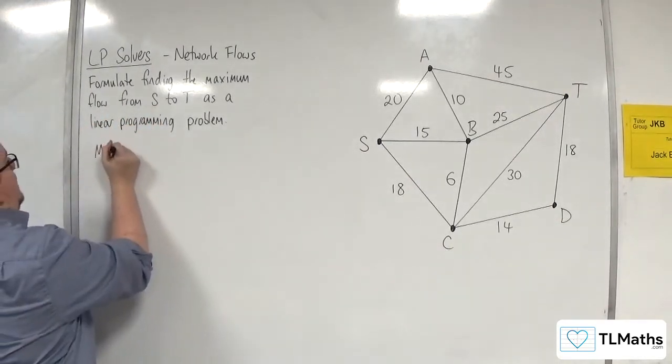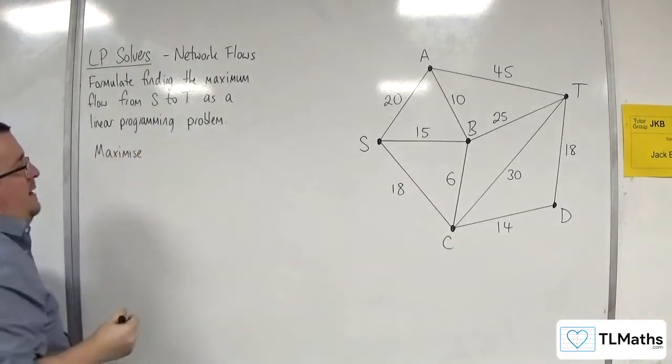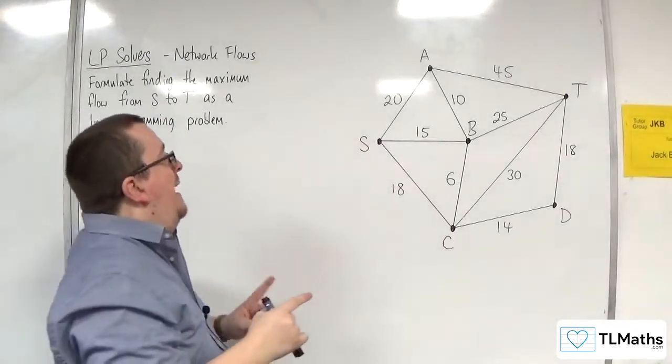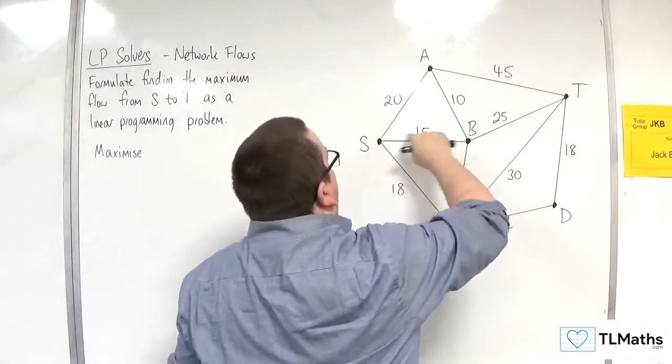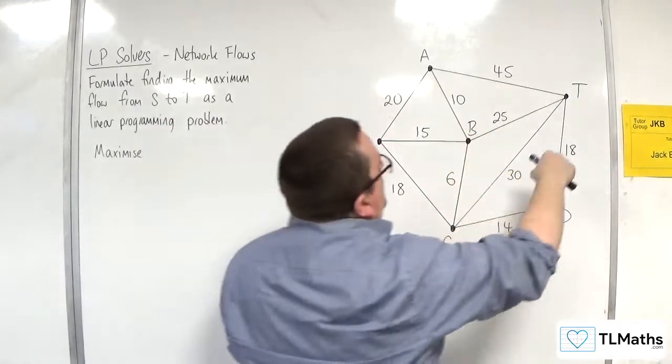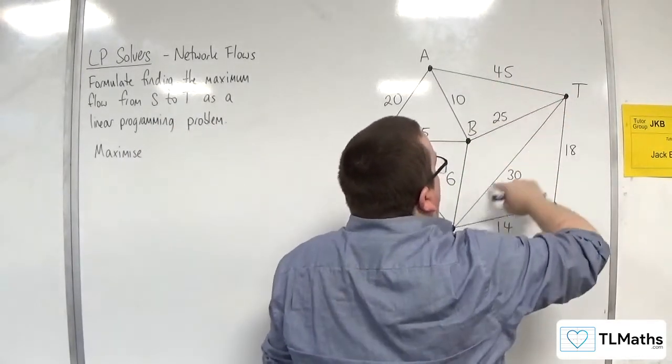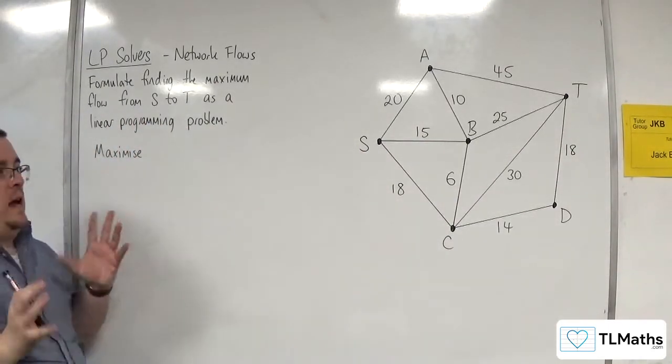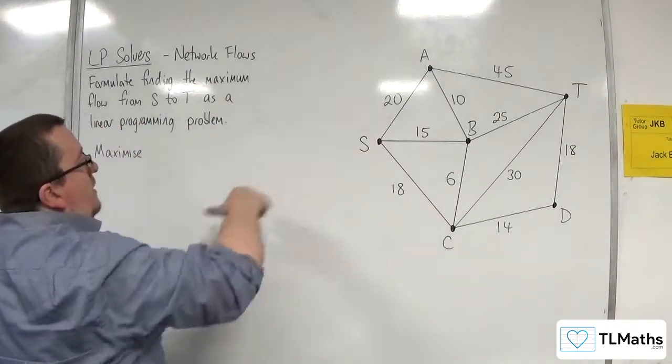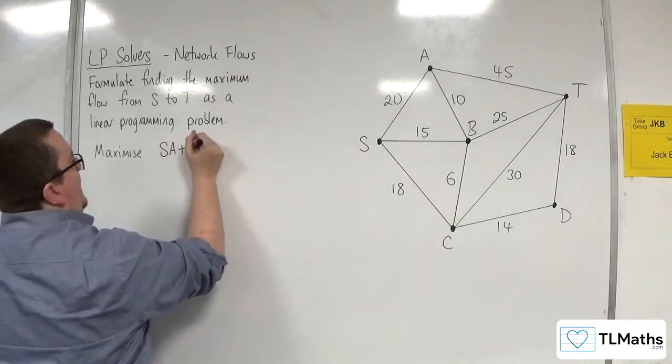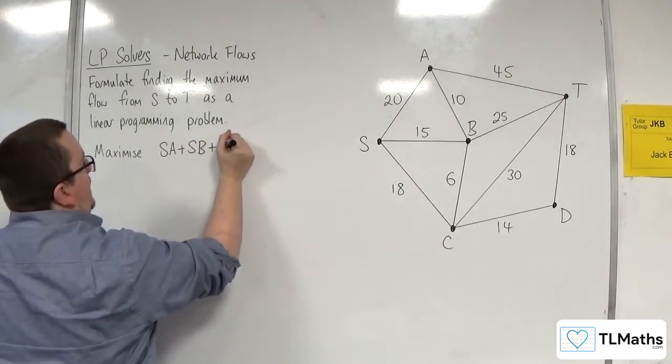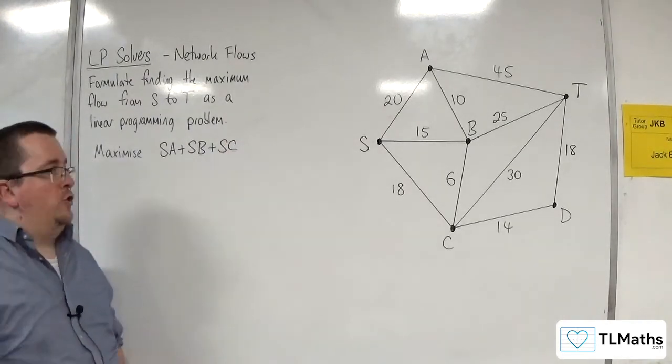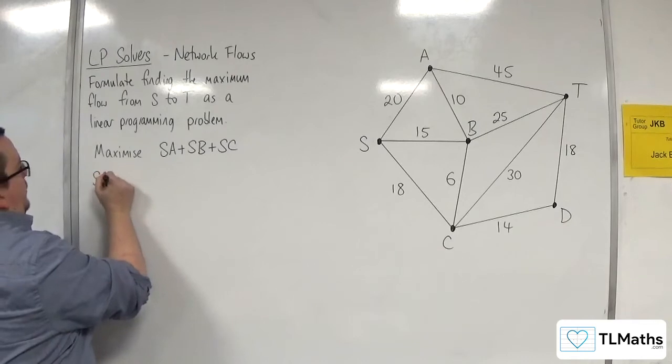First of all, we have the objective function where we want to maximize. Now, you can either look at the sum of the edges coming out from the source from S, or the sum of the edges going into the sink at T. So it's really up to you. So I'm just going to go with SA plus SB plus SC. So that's my objective function, subject to...